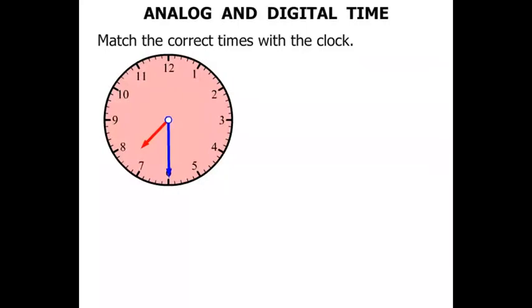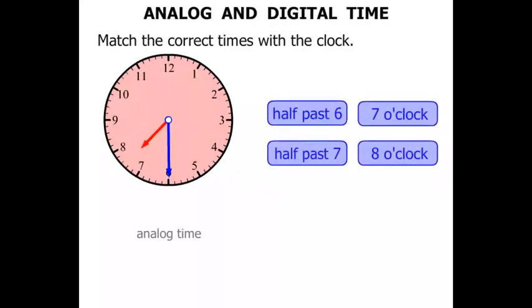This next clock again, the big hand is pointing straight down, so it would be half past something we would think. So which is it? Half past six or half past seven? Well the shorter hand has gone past the seven, so of course it is half past seven.